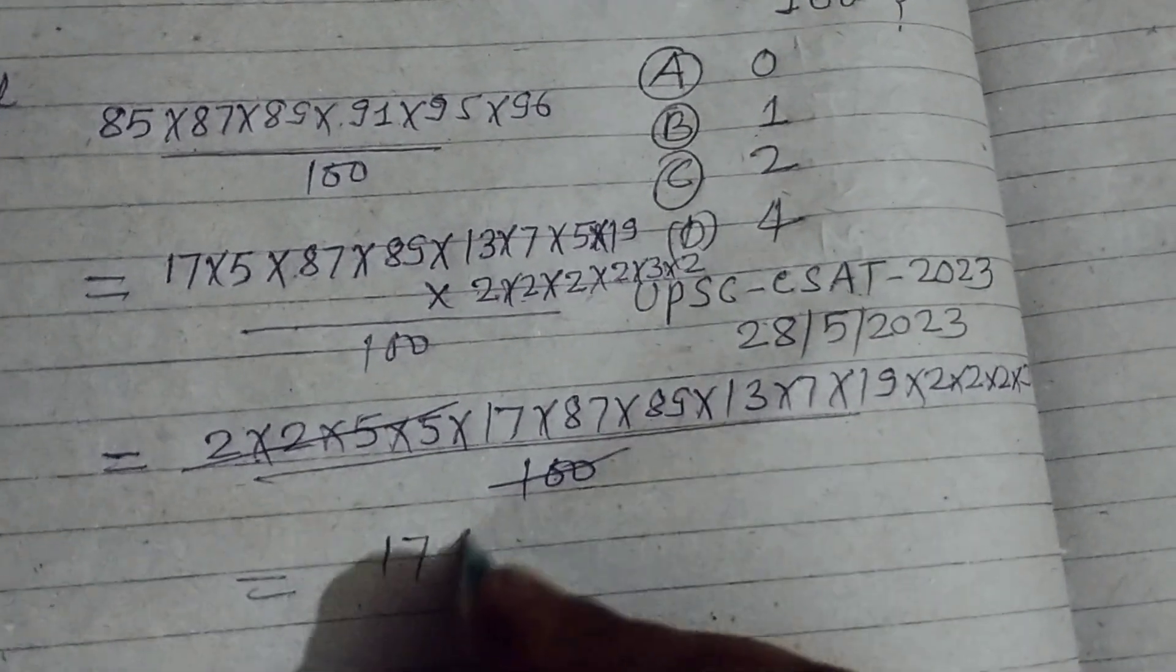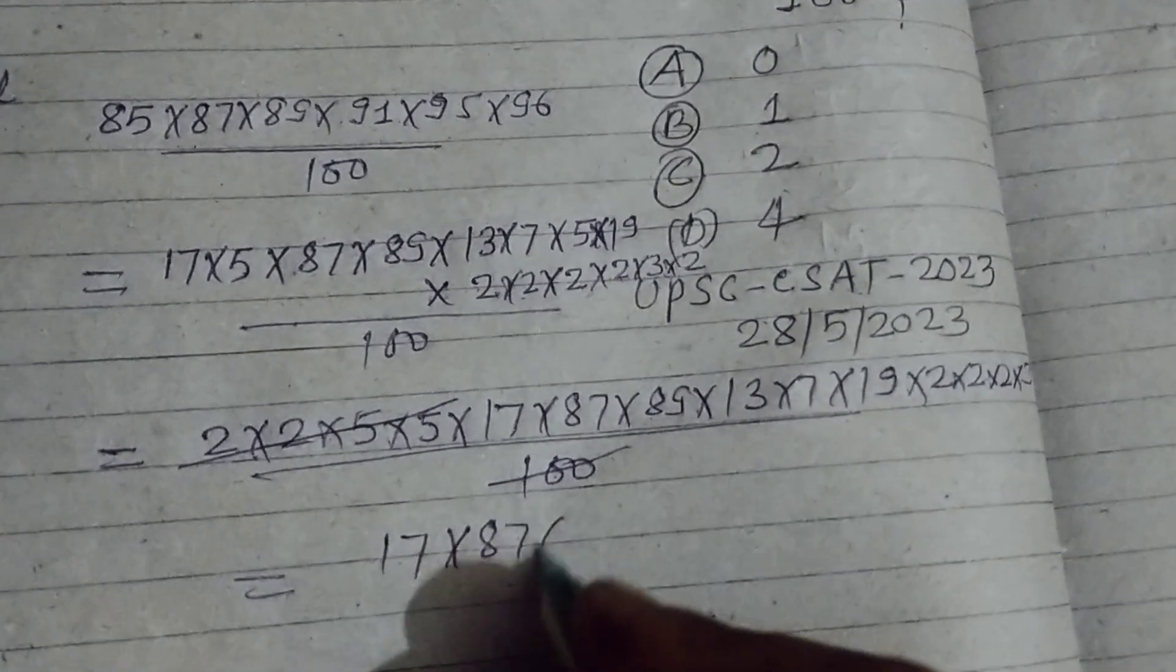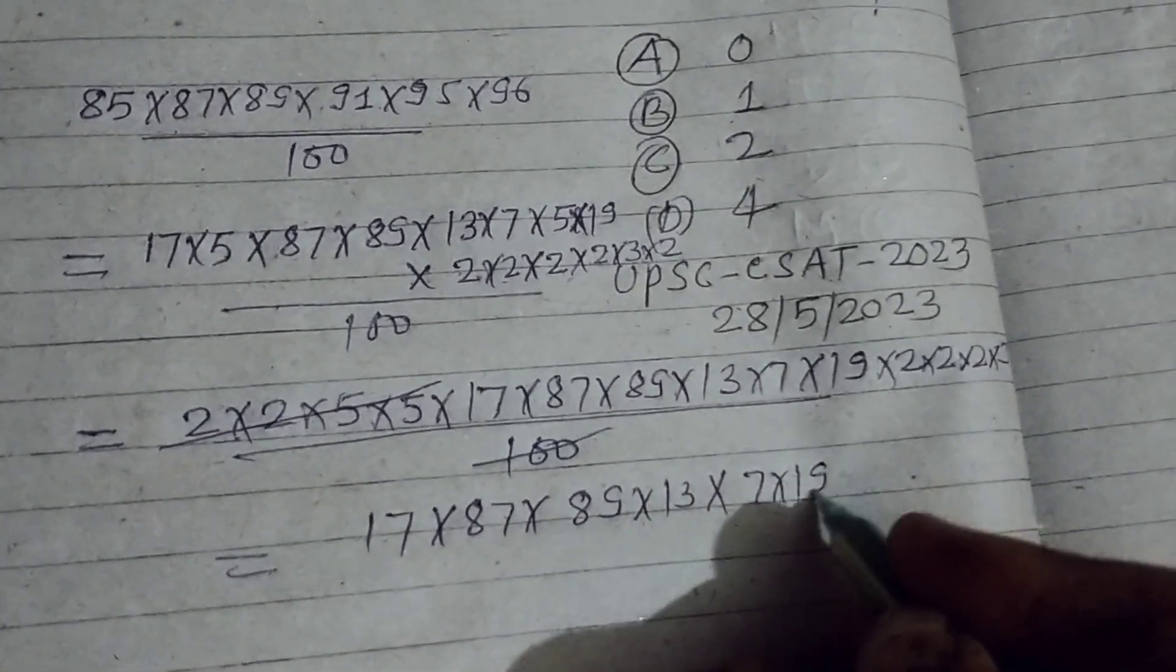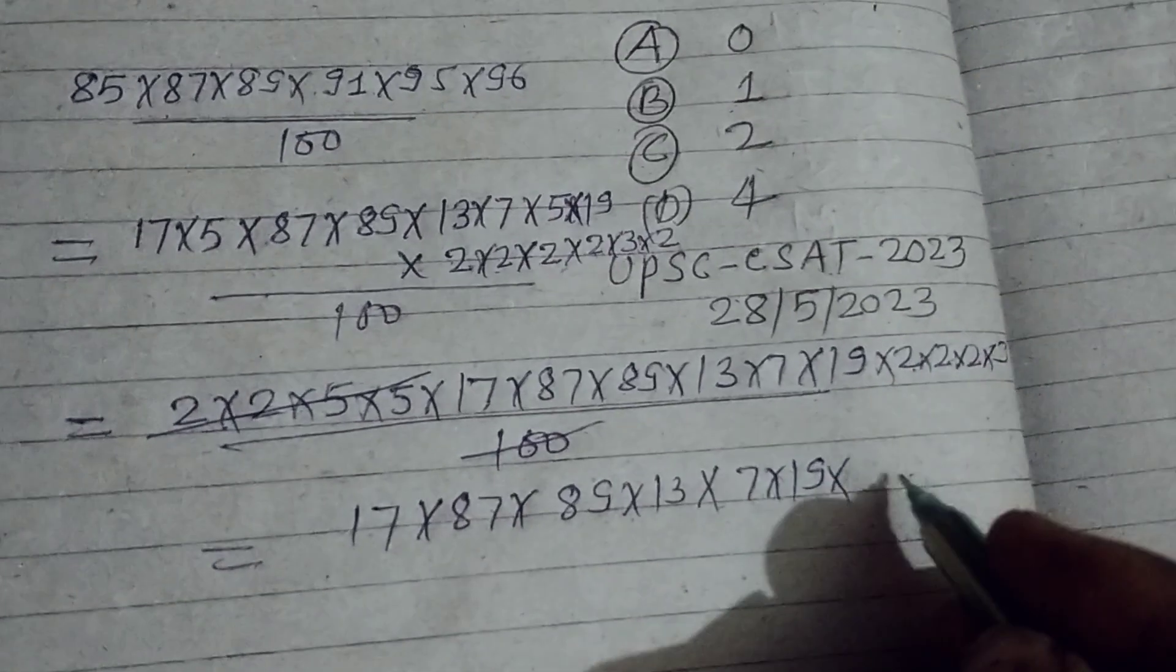So 17×87×89×13×7×19×2×4×4×8×8×3 remains.